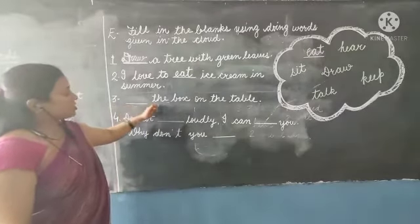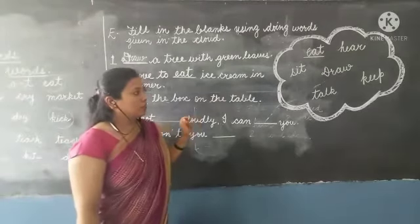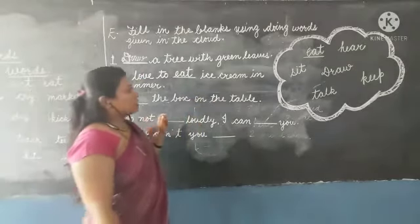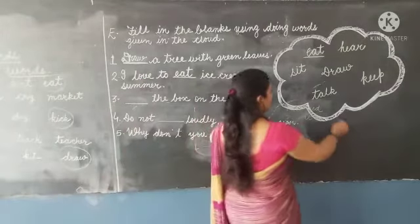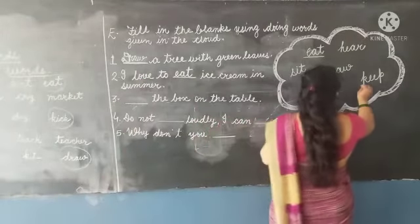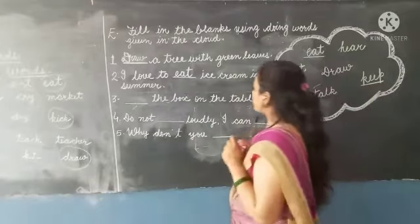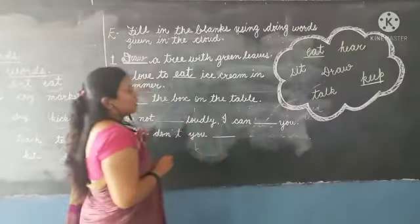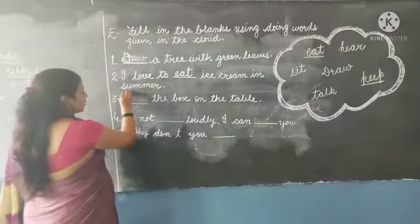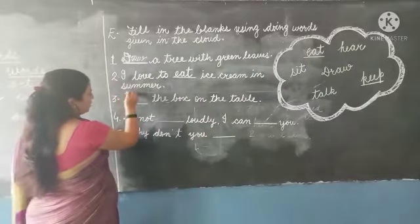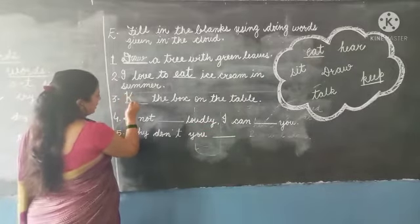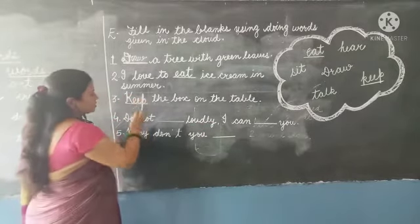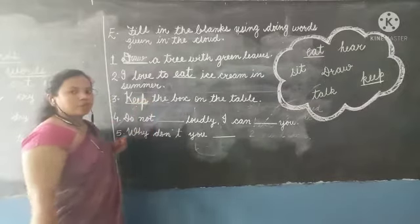The next sentence: blank the box on the table. We write the doing word from the cloud - 'Keep'. Keep the box on the table. We write K in capital letter because we always start a sentence with a capital letter.